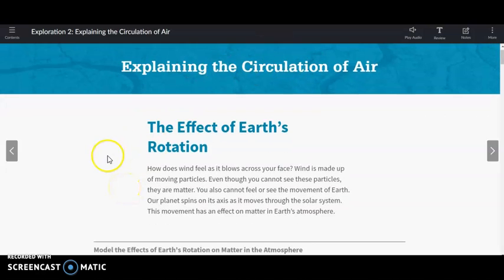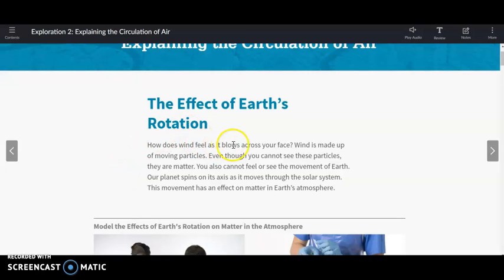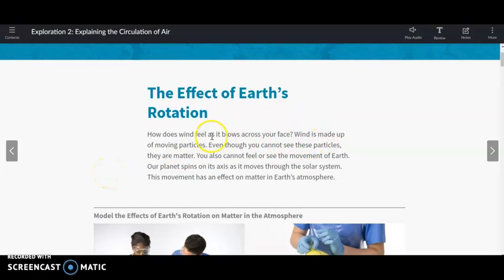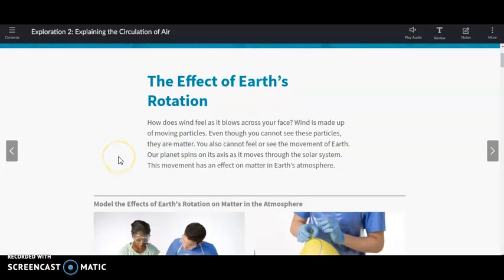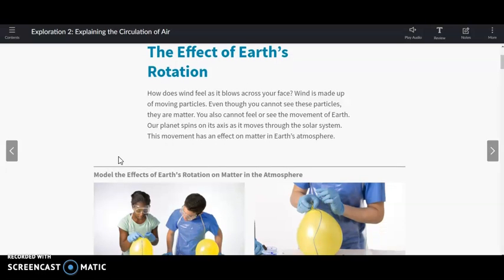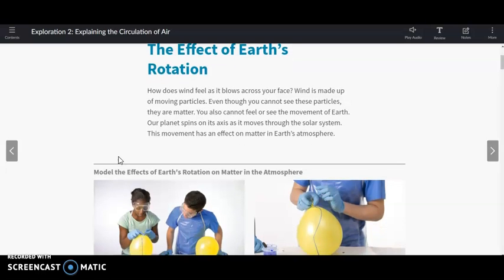Explaining the circulation of air. The effect of Earth's rotation. How does wind feel as it blows across your face? Wind is made up of moving particles. Even though you cannot see these particles, they are matter. You also cannot feel or see the movement of Earth. Our planet spins on its axis as it moves through the solar system. This movement has an effect on matter in Earth's atmosphere.